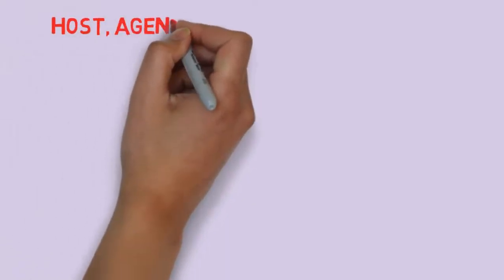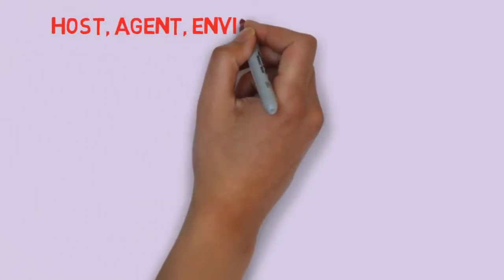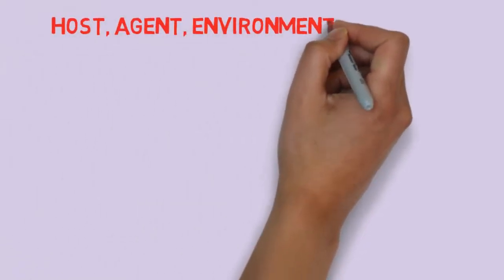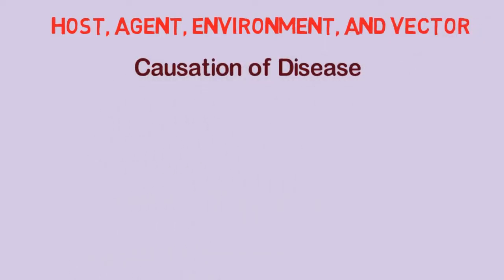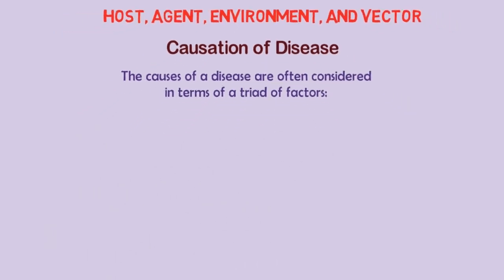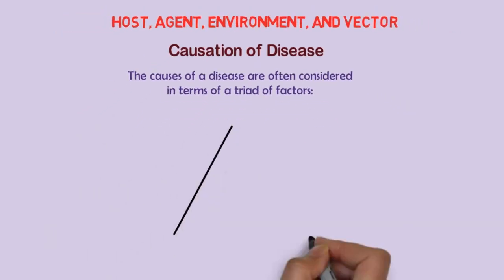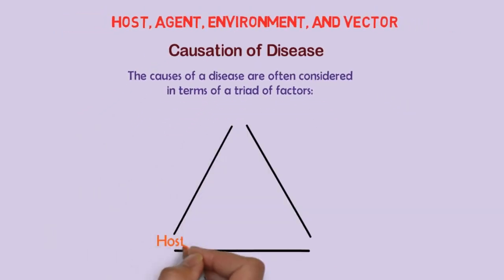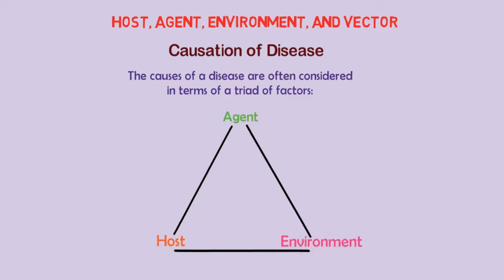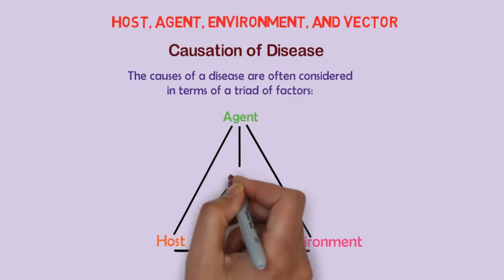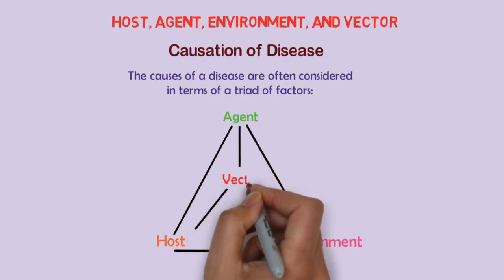Hello and welcome to this video where we will be explaining the relationship between the host, agent, environment, and vector in the causation of disease. The causes of a disease are often considered in terms of a triad of factors: the host, the agent, and the environment. For many diseases, it is also useful to add a fourth factor, the vector.